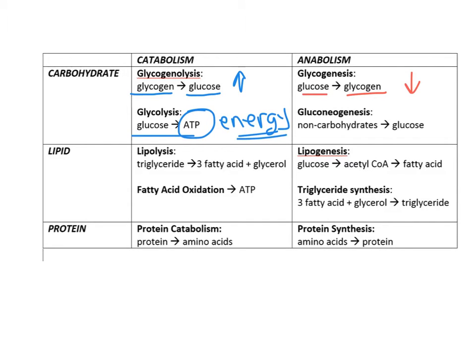Gluconeogenesis is the synthesis of glucose from non-carbohydrates, including fatty acids and certain amino acids. The purpose is to increase blood glucose, which can then be utilized to produce energy through glycolysis.